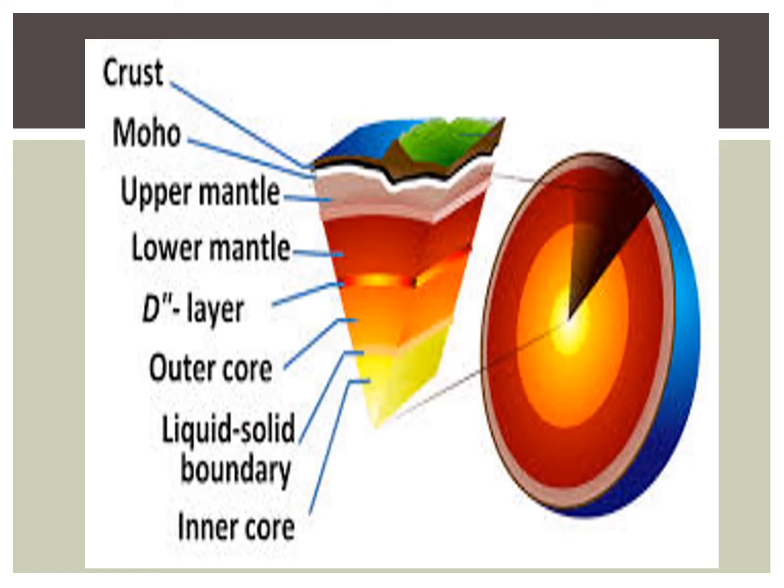The slide shows the crust. Then the connecting layer which is known as the Moho layer, which connects the crust to the upper mantle. Then comes the lower mantle, the D layer, the outer core, the liquid-solid boundary, and finally the inner core which is actually composed of magma.